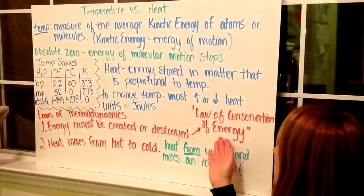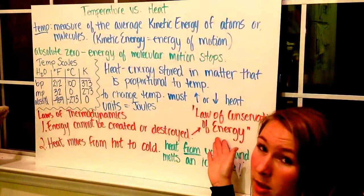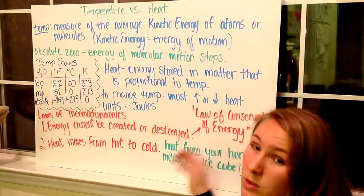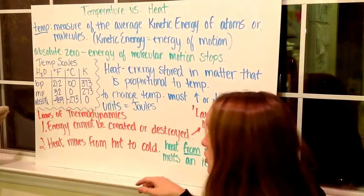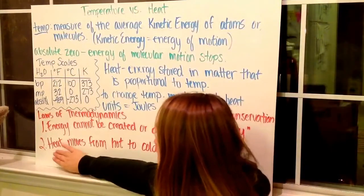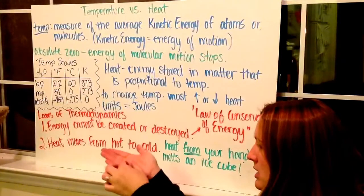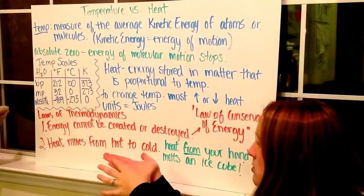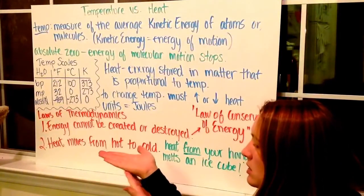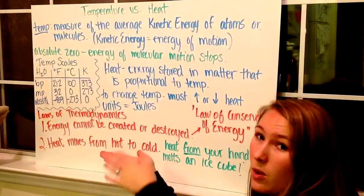Much like we call that law of conservation of mass, where the mass cannot be created or destroyed. The second is that heat moves from hot to cold. So for example, heat from your hand, if you're holding an ice cube. Heat from your hand is going to melt the ice cube, and so the heat is going to go from your warm hand into the cold ice cube.